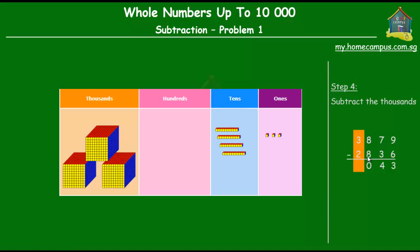Lastly we move on to subtracting the thousands. We have 3 thousands and we subtract 2 thousands from there. What we have left is 1 thousand.